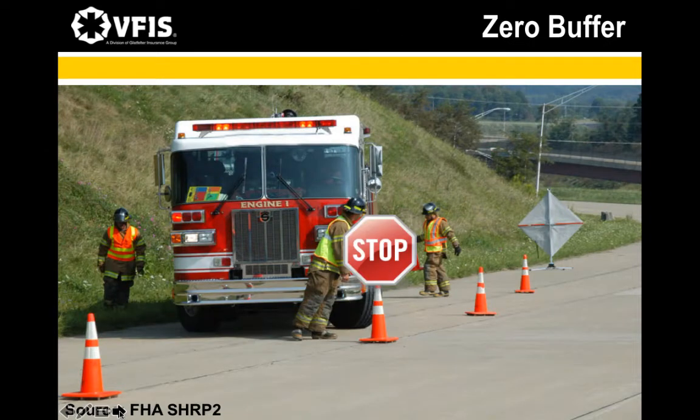Every block creates an area of danger at the space between the furthermost point of the angle — usually at the front left or front right of the vehicle — and the area where traffic passes. This area is referred to as the zero buffer. If you have to pass through the zero buffer zone, stop, check for traffic, and then proceed along the unit, remaining as close to the emergency vehicle as possible.